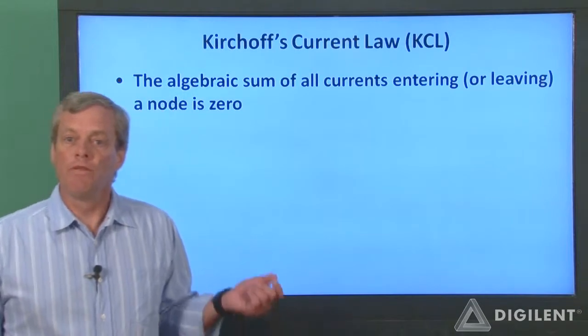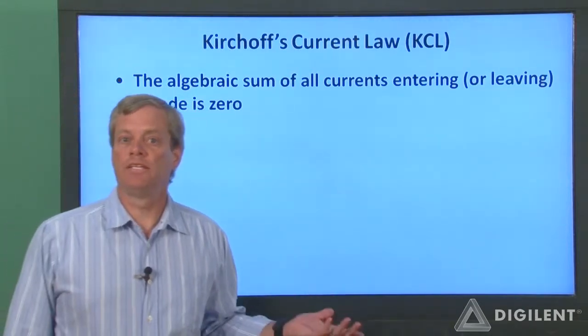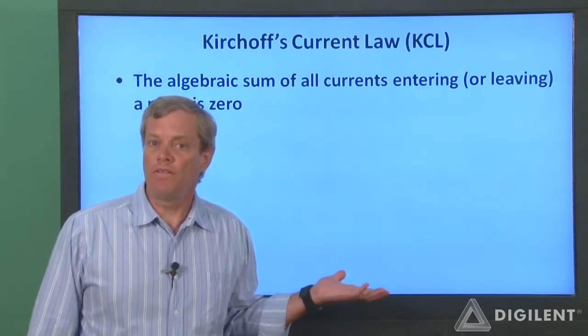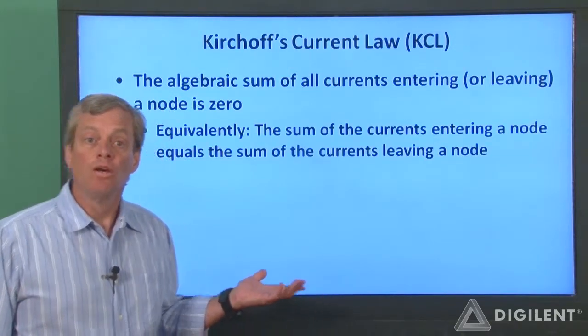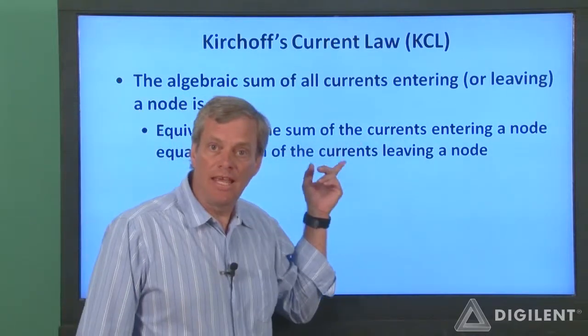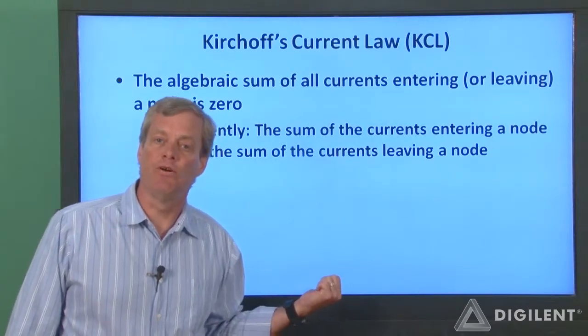Kirchhoff's current law is very simple. The sum of all the currents entering a node or leaving a node is zero. Really, all this is telling us is the total charge at a node can't change. Another way of stating KCL is that the sum of the currents entering a node equals the sum of the currents leaving the node.